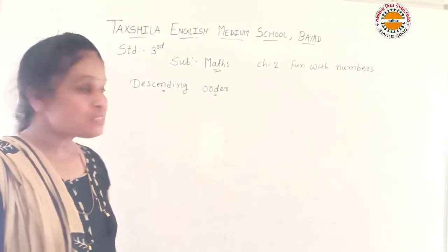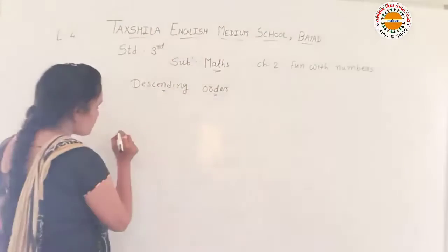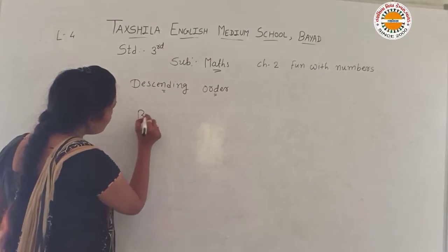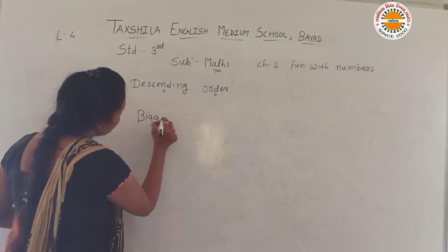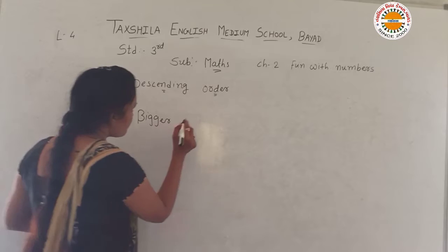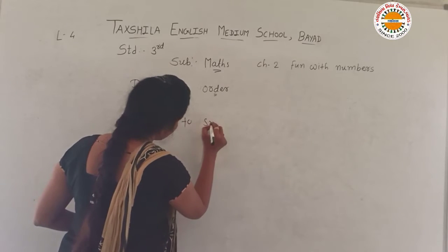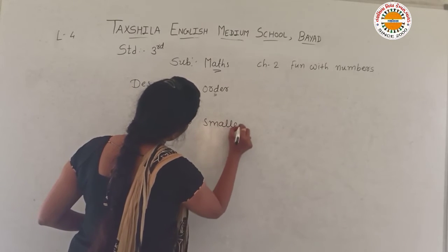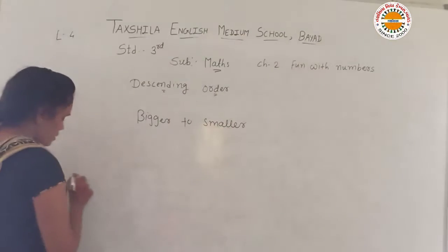Descending order means what? Descending order means bigger to smaller. Bigger to smaller.